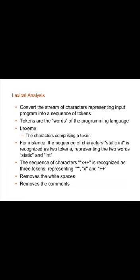Hello friends, today we are going to discuss different phases of a compiler in detail — the structure of a compiler. In the last lecture we already discussed phases of a compiler, but here we are going to discuss how a particular instruction is converted into machine-understandable code or machine code. The different stages of the conversion process are: lexical analysis, syntax analysis, semantic analysis, intermediate code generation, code optimization, target code generation, symbol table, and error handler.